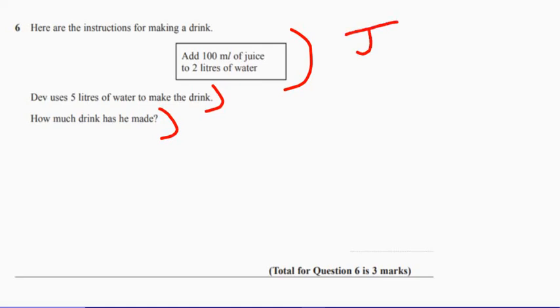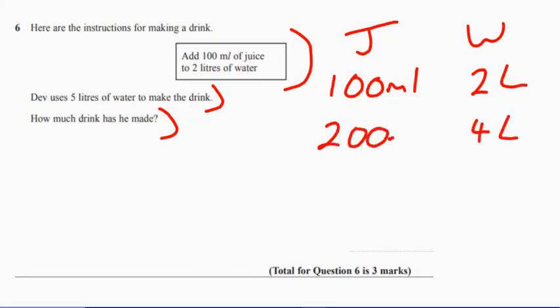So we've got juice and we've got water. So it has two litres and 100 millilitres. So let's add another two litres in. So four litres, that would be 200 millilitres of juice. But I've got five litres.